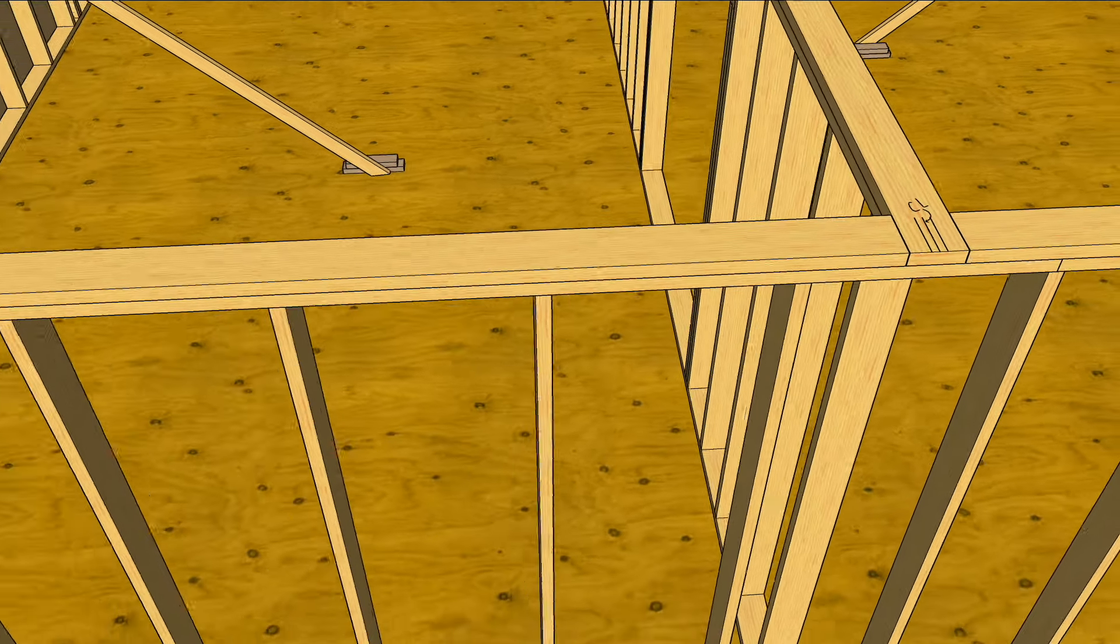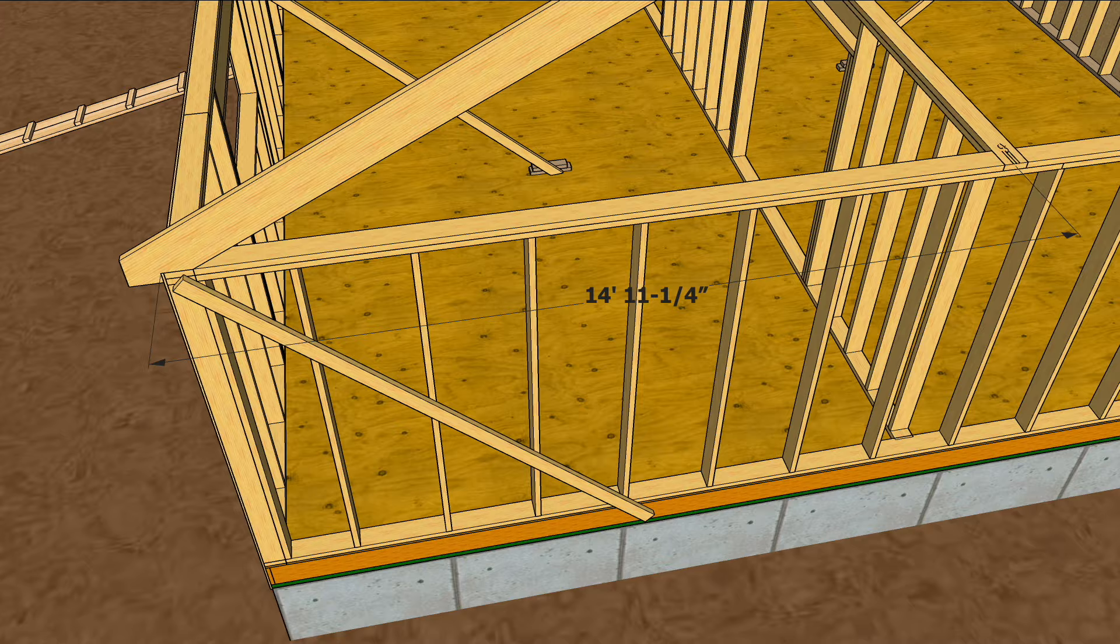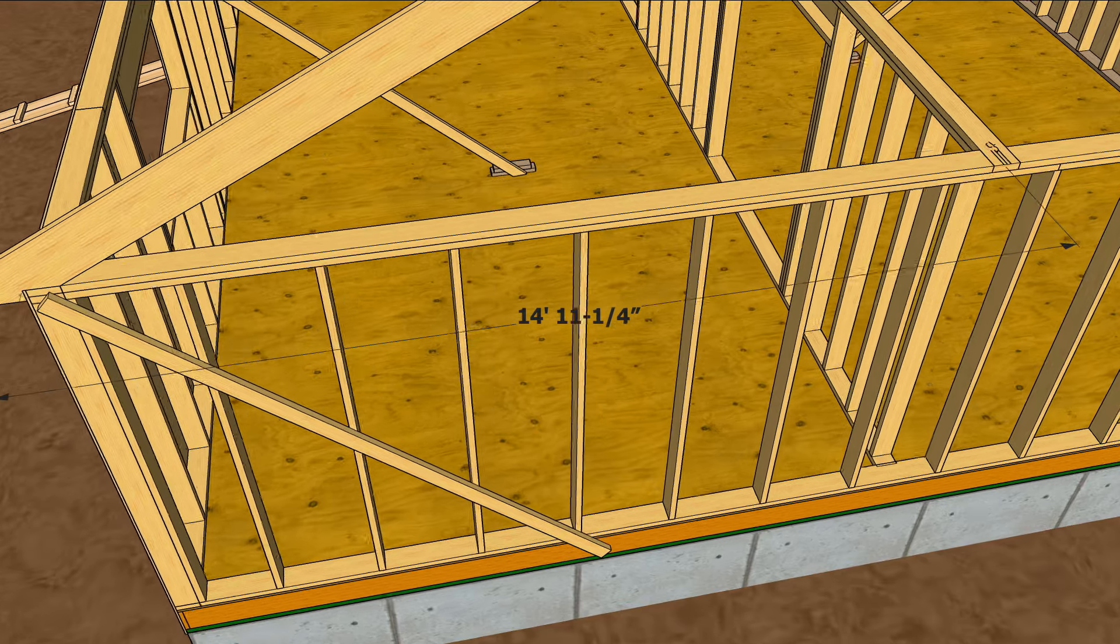Hook the outside of the building with your tape and measure to that inside line of the ridge, and that's the run. 14 feet, 11 and a quarter in this case.